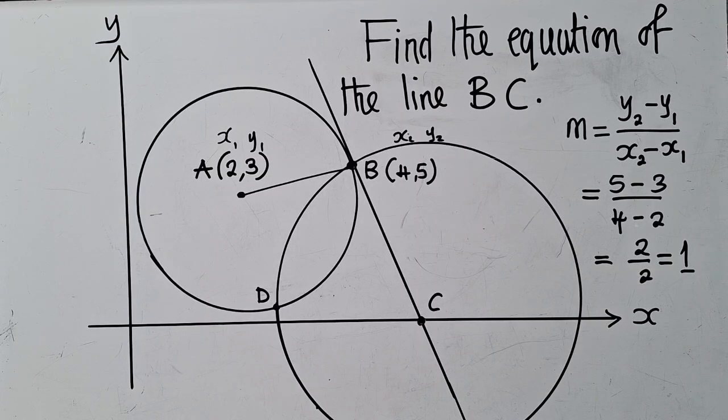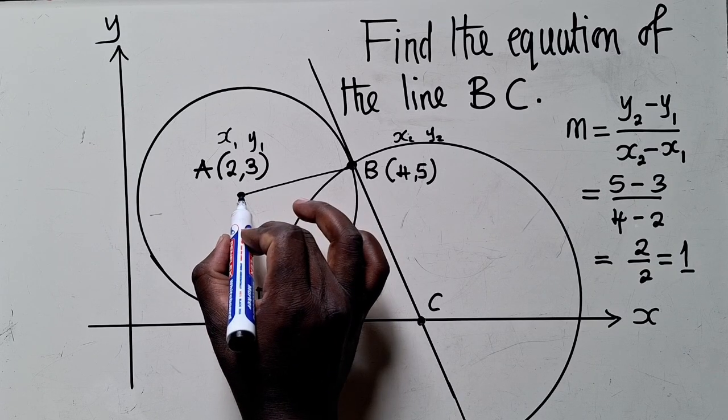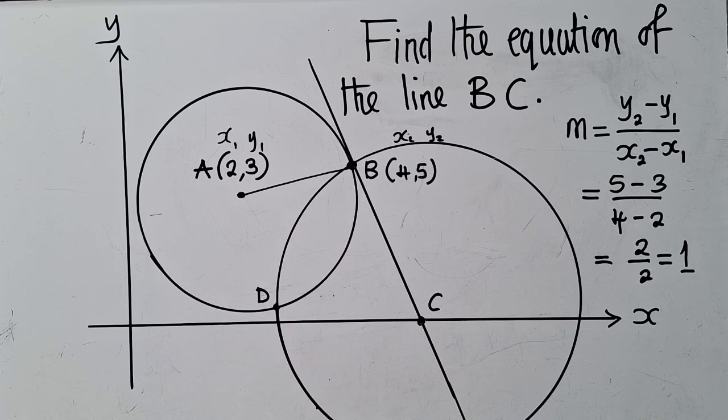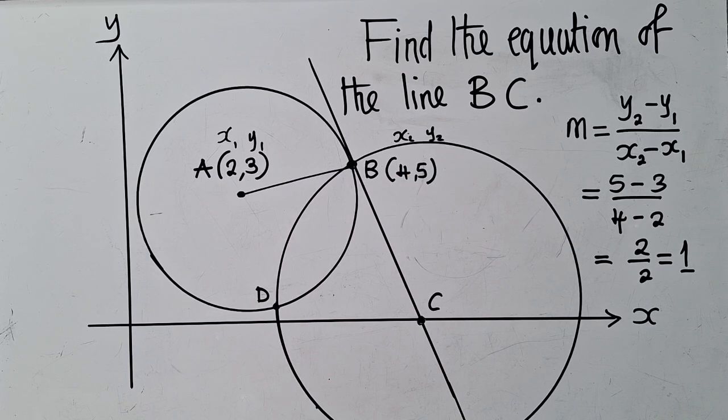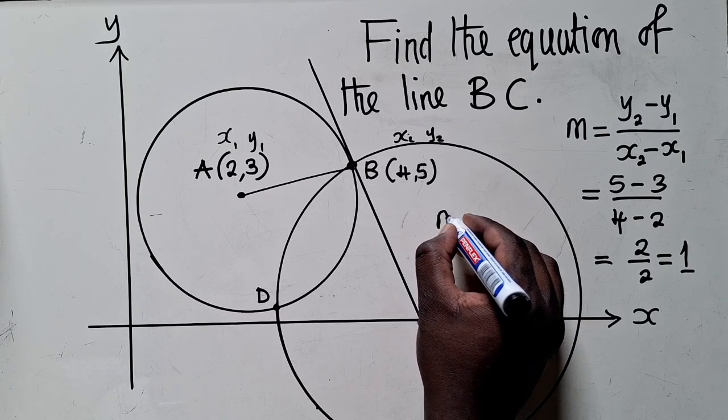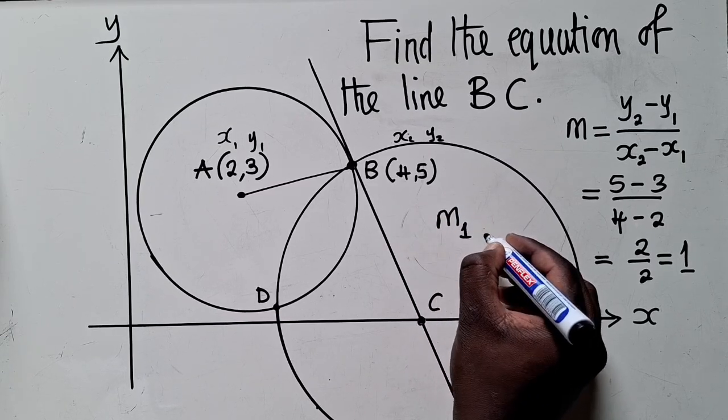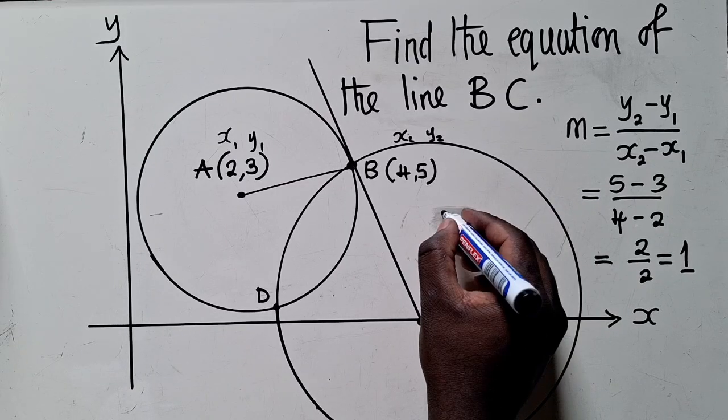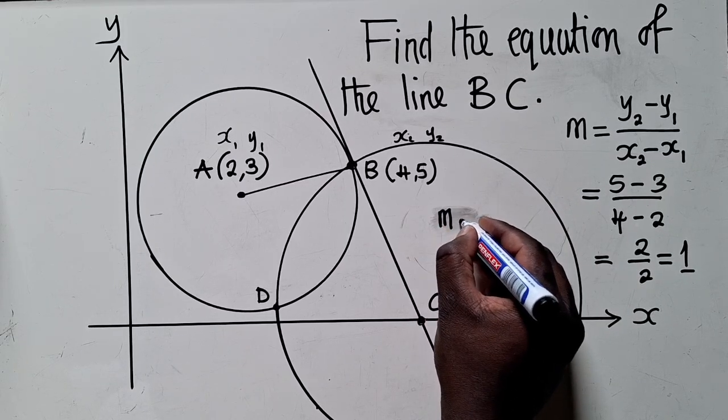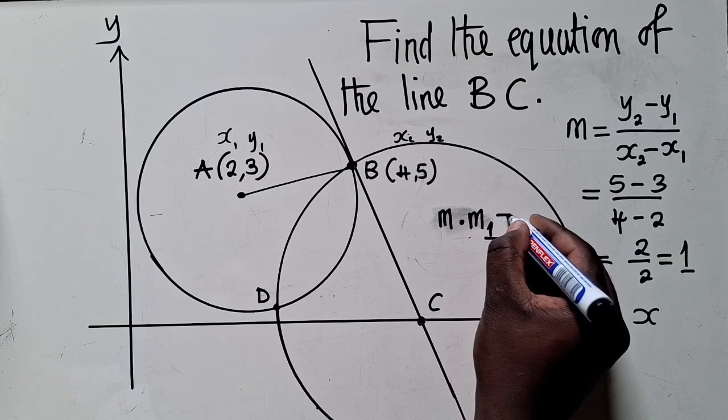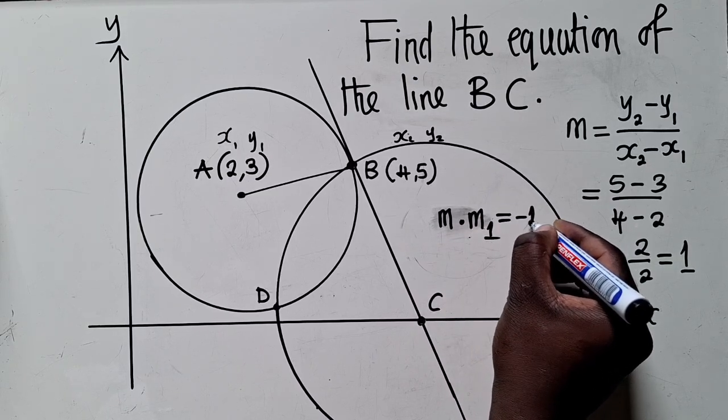Now we've known the gradient, the slope of this line. So we can use now the idea of a perpendicular. Look at this. When you've got M1, or we just say M, the original gradient, which is M, times M1, this must give us negative 1.